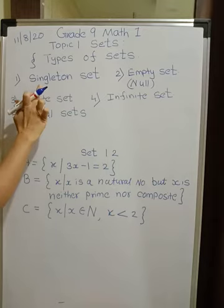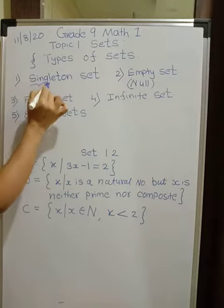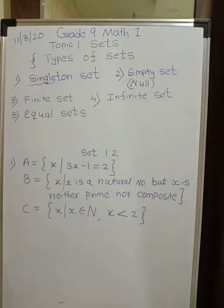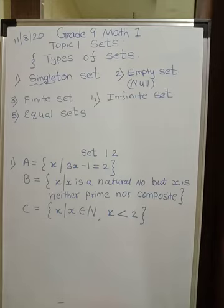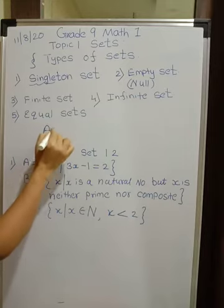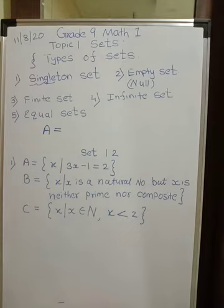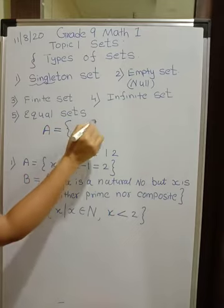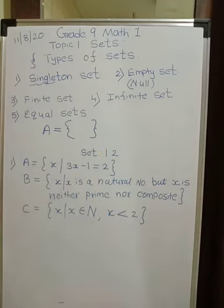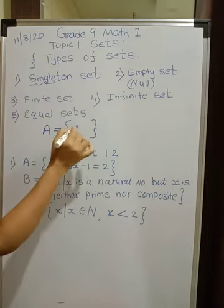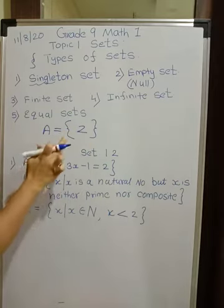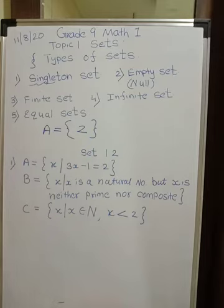First is the singleton set. The name itself tells you — single means only one. A set which contains only one element is called a singleton set. For example, if A is a set of even prime numbers, the only even prime number is 2, so this set contains only one element, and therefore it is an example of a singleton set.